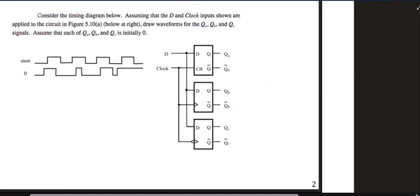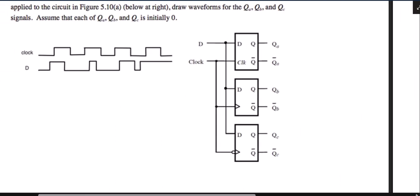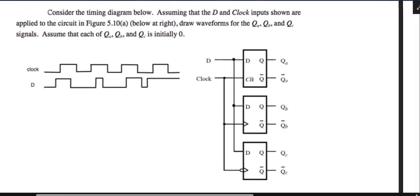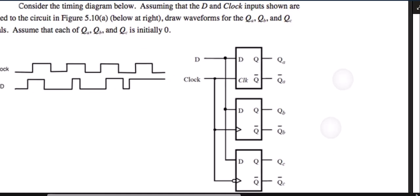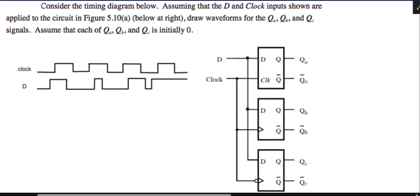So I'm going to go on to this one. I'll save both of these on the same file. So this one says, consider the timing diagram below. Assuming that the D and clock inputs shown are applied to the circuit at the right, draw waveforms for QA, QB, and QC.